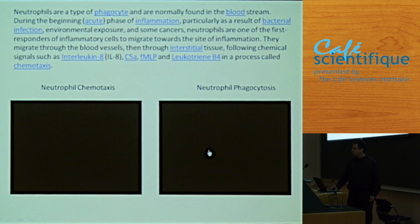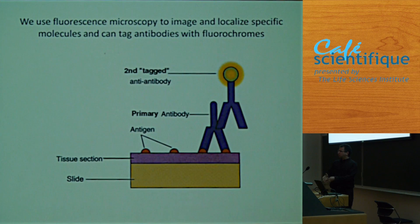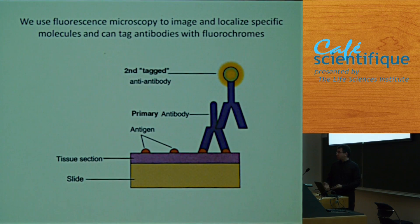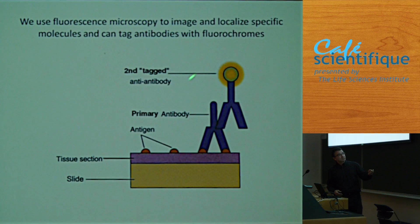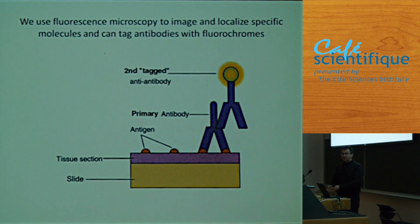We can see very nicely in the microscope that the cells move. What we can't see in those images is particular proteins, particular antigens, or particular DNA. So what we've done - and this is the real advantage of fluorescence microscopy - is we've been able to use dyes that can be attached to antibodies.